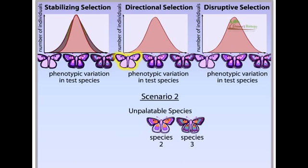Predators soon learn that any butterfly with few markings is edible. This phenotype of our edible test species is no longer protected, so individuals with few markings survive and reproduce less well than those more heavily marked. The graph shifts to the right. This is directional selection.